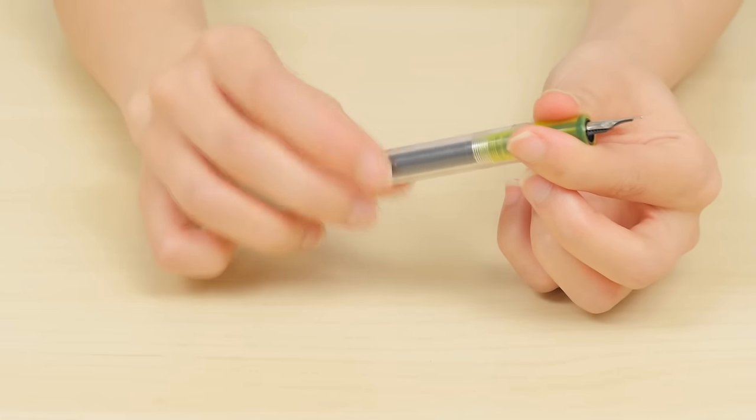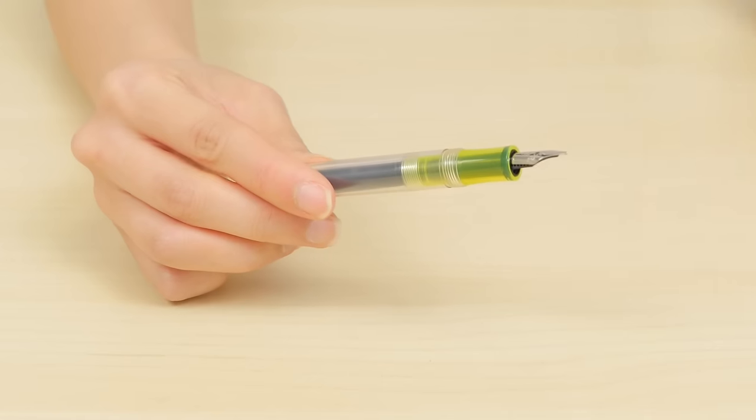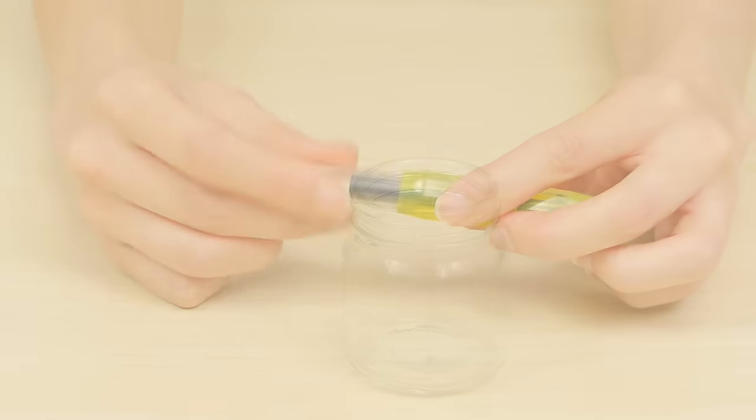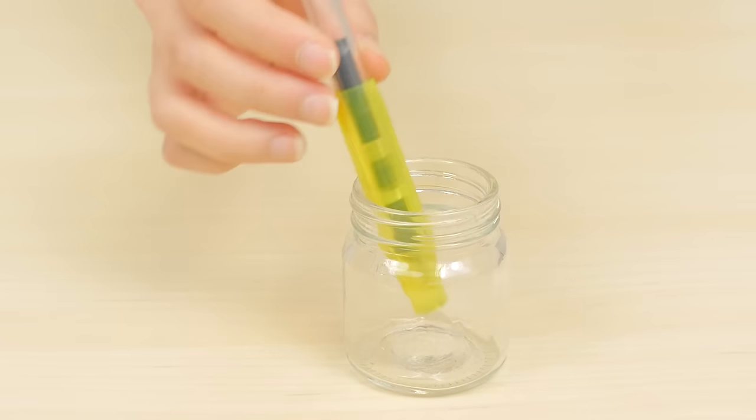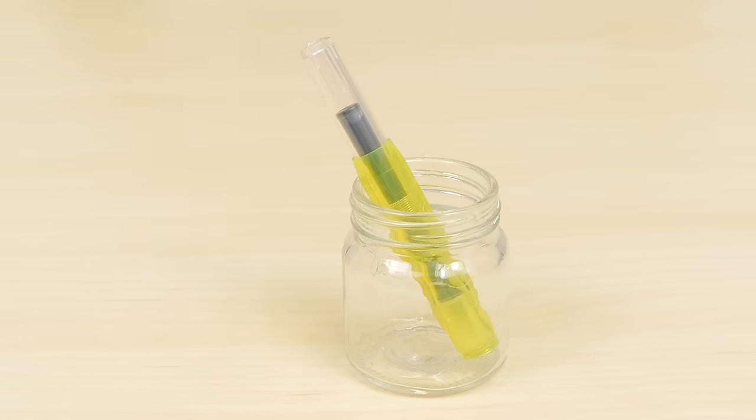Reassemble the pen. Cap the pen. Leave it pointing downward to help the ink saturate the feed. This may take an hour or two, so don't worry if the pen doesn't start writing right away.